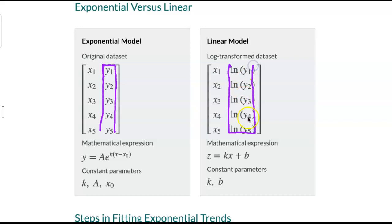That has this formulation: z equals kx plus b, where k denotes the slope and b is the intercept with the vertical axis. Those procedural steps are summarized in this list.